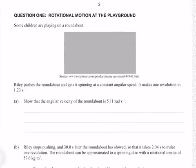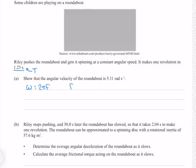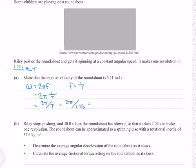Question 1. Some children are playing on a roundabout. Riley pushes the roundabout and gets it spinning at a constant angular speed — it makes 1 revolution in 1.23 seconds. Show that the angular velocity of the roundabout is 5.11 radians per second. The value given is a period. From our formula sheet, angular velocity is 2πf. Since frequency is 1 over period, we can write ω = 2π/T. Putting our period in gives 5.11 radians per second to 3 significant figures.